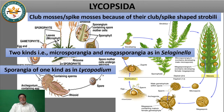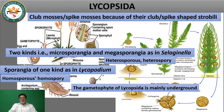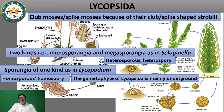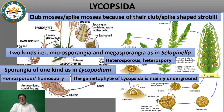If you look at the base, the club shape gives the name club moss. Regarding the gametophyte, it is mainly underground. When it grows, it develops into the gametophyte, which can be male gametophyte or female gametophyte.